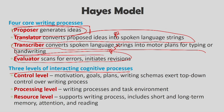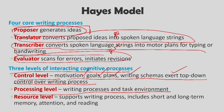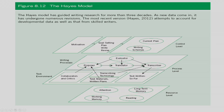The three levels of interacting cognitive processes in the Hayes model are: cognitive control (motivation, goals, planning, writing scheme — exerting top-down control over writing processes); processing level (writing processes and task environment — whether writing on paper or blackboard, and the source of information); and resources level (supporting processes such as short-term and long-term memory, attention, and reading). All these cognitive processes and four core processes interact together to form the Hayes model.